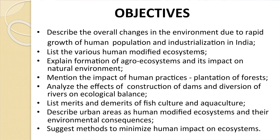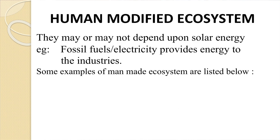The three major areas where we have modified natural ecosystems are industries, urban settlements, and agricultural fields where we cultivate our crops. Before we go into detail, let us go through the objectives of the lesson: describe the overall changes in the environment due to rapid growth of human population and industrialization in India; list the various human modified ecosystems; explain formation of agro ecosystems and their impact on natural environment; mention the impact of human practices and plantation of forests; analyze the effects of construction of dams and diversions of rivers on ecological balance; list merits and demerits of fish culture and aquaculture; describe urban areas as human modified ecosystems and their environmental consequences; suggest methods to minimize human impact on ecosystems.